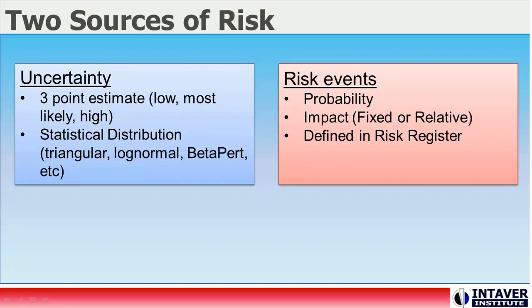When creating a cost risk model, we can apply two types of risks to our costs: uncertainty and risk events. Uncertainty is characterized by three-point estimates — low, most likely, and high — combined with a statistical distribution. Uncertainty can be applied to both duration and costs for the purpose of cost analysis. Risk events are also sometimes referred to as risk drivers, and are characterized by a probability of occurrence and impacts. For cost risk analysis, both fixed costs and schedule impacts can be used.